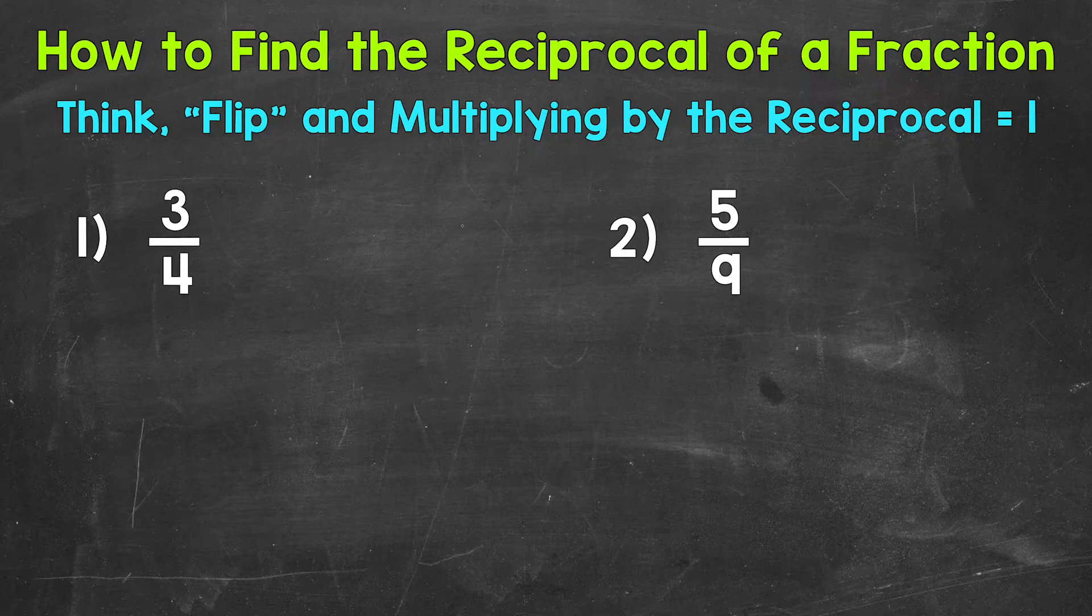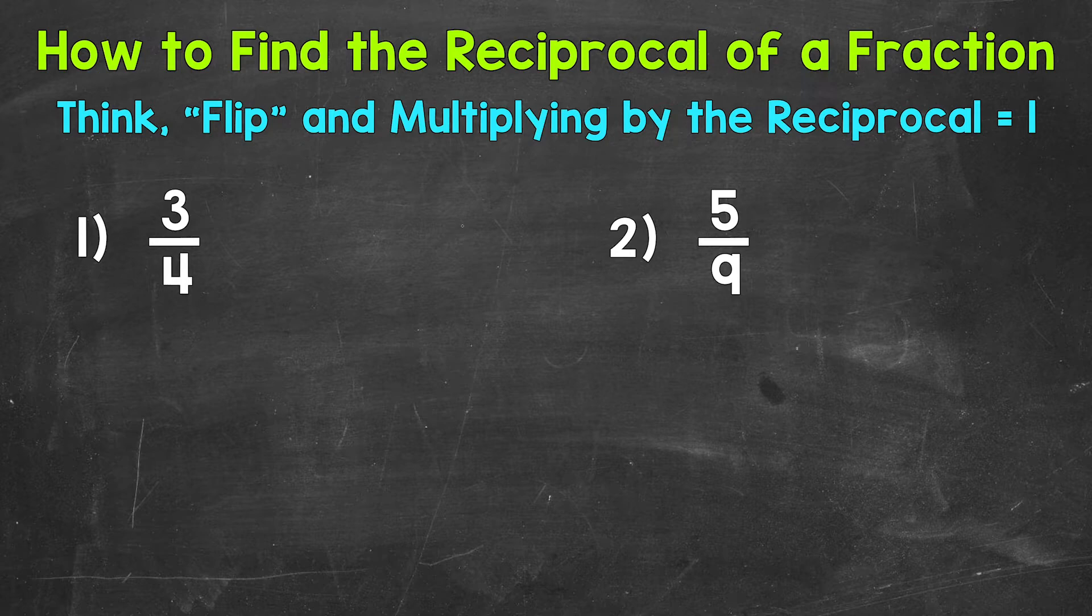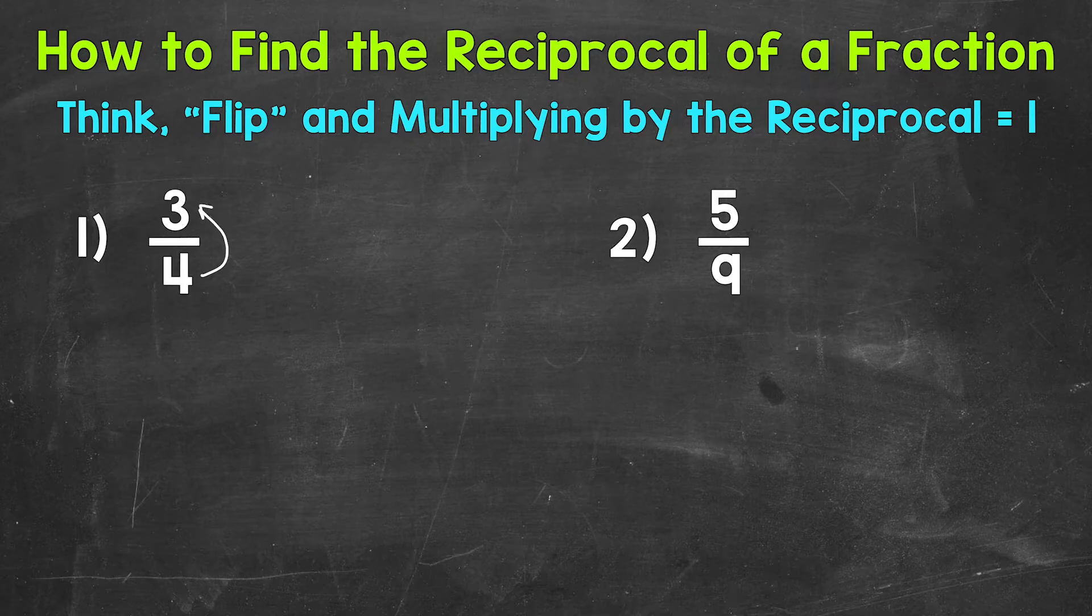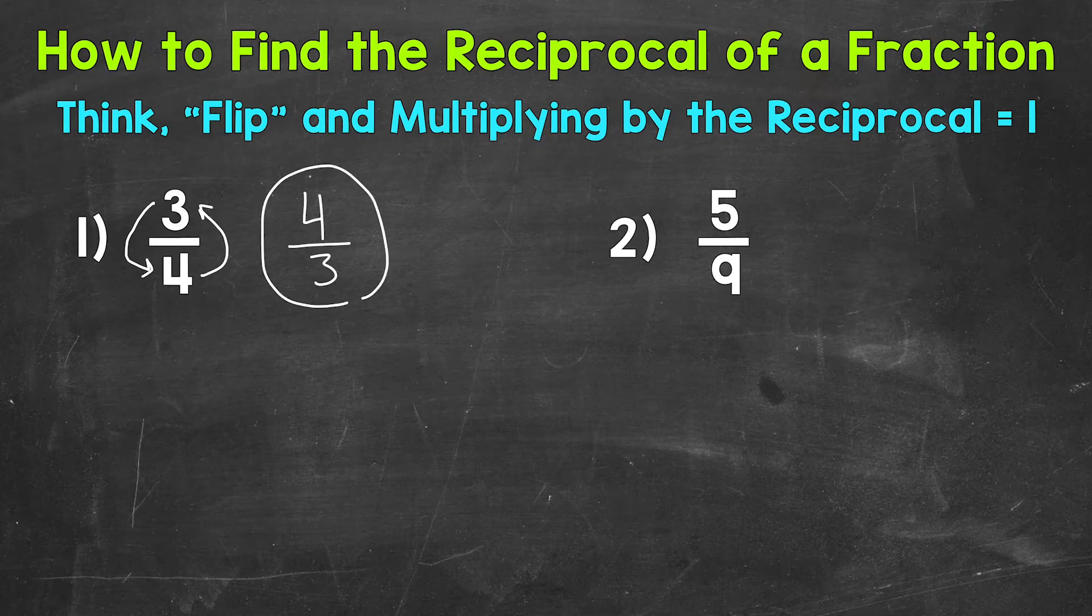We do this by flipping the fraction. So the denominator of 4 is going to become our numerator, and the numerator of 3 is going to become our denominator, so we get 4 thirds. That's the reciprocal of 3 fourths.